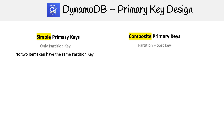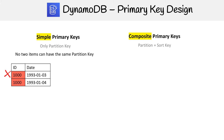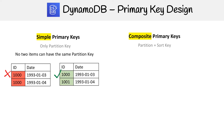For simple keys, what's important to remember is that no two items can have the same partition key. So here, let's say the ID is the partition key — you can see that two values are the same, that's not going to work out. But here they are different, so that is great.